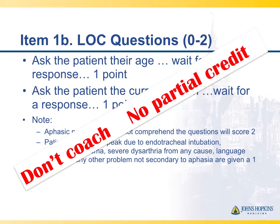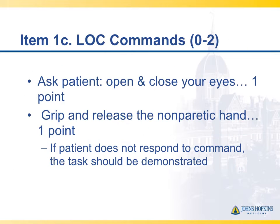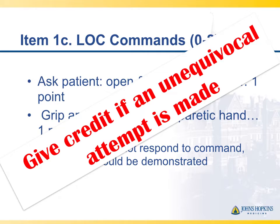Patients who are intubated or unable to speak for some reason other than aphasia are scored a one. The third part of item one assesses the ability to follow commands, assessed by asking the patient to open their eyes, then close them, and to squeeze your hand. Credit is given if an attempt is made that demonstrates understanding — for example, if they're too weak to do it, but try.